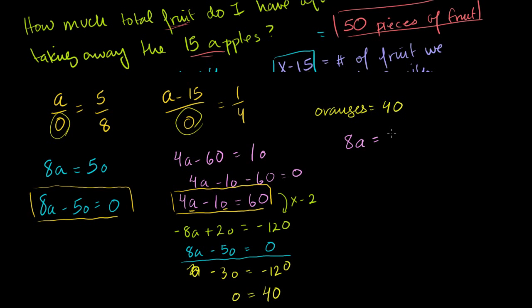So we have 8 times our number of apples is equal to 5 times the number of oranges, or 5 times 40. 8 times the number of apples is equal to 200. Or the apples is equal to 200 over 8, which is equal to 100 over 4, which is equal to 25.